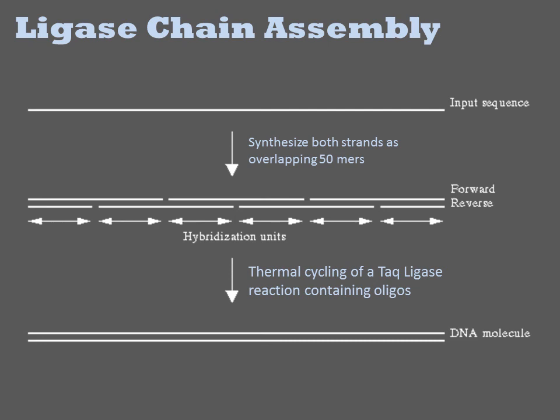Once oligonucleotides are obtained, they must be assembled into synthons. The simplest of these methodologies is ligase chain assembly. Here, both strands of the input sequence are synthesized completely in such a way that they can all anneal to one another into the full-length target sequence.